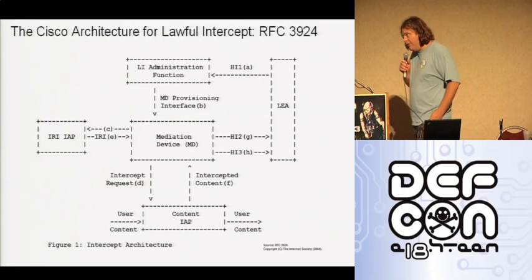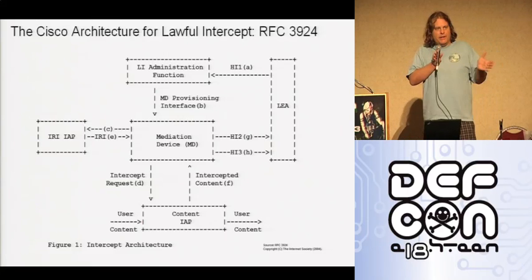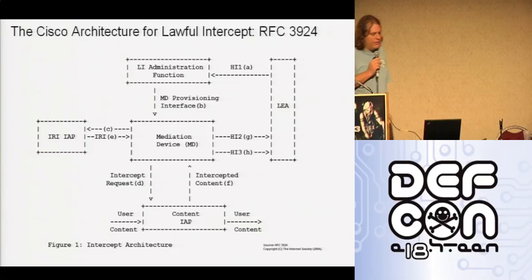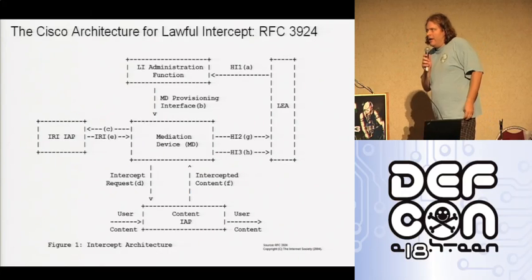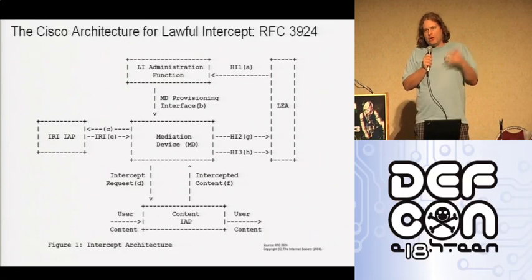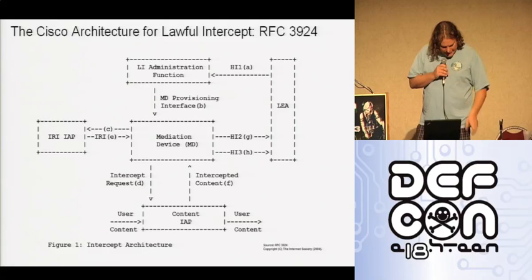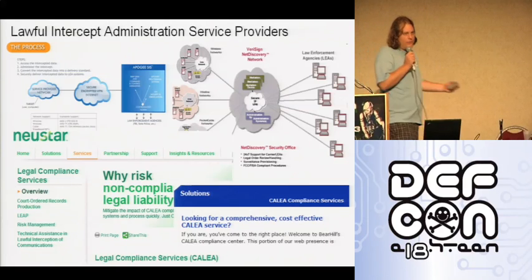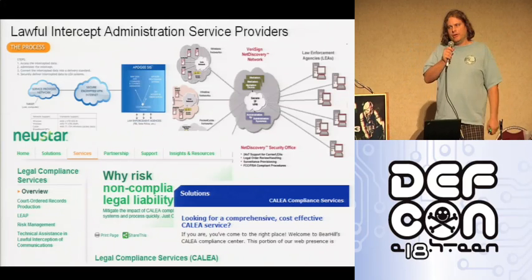Let's talk about the architecture. This diagram is from the RFC. Some entities in the diagram are actual pieces of equipment; some are organizations of people. The first is the LEA — the law enforcement agency — who gets permission to wiretap a suspect and brings it to the ISP. The LI administration function is the organization within the ISP that handles the law enforcement interface: they receive the warrant, validate it, and provision the wiretap. You can actually outsource your lawful intercept administration function if you're a large ISP — there are companies that hire lawyers and technical people to perform this service.